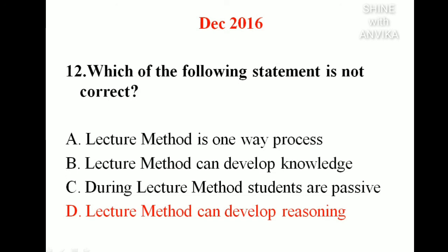Next question: which of the following statements about lecture method is NOT correct? Lecture method is a one-way process — correct, because the teacher is active and students are passive. Lecture method can develop knowledge — correct. During lecture method, students are passive — correct. But 'lecture method can develop reasoning' is not correct — reasoning is developed through decision-making, problem-solving, or experiment-oriented methods, not through lecture method. So the correct answer is option D.